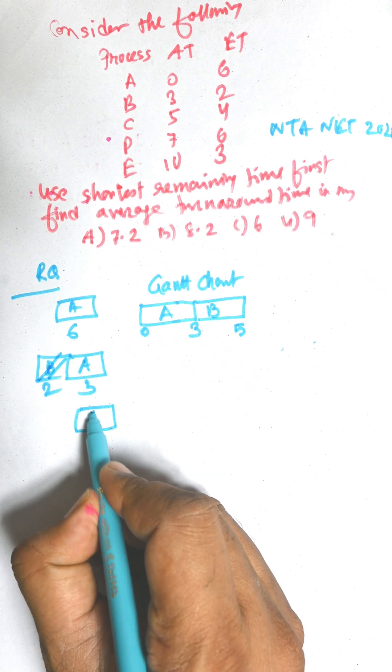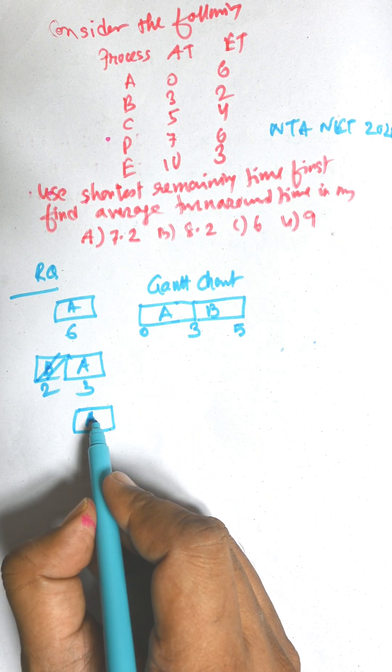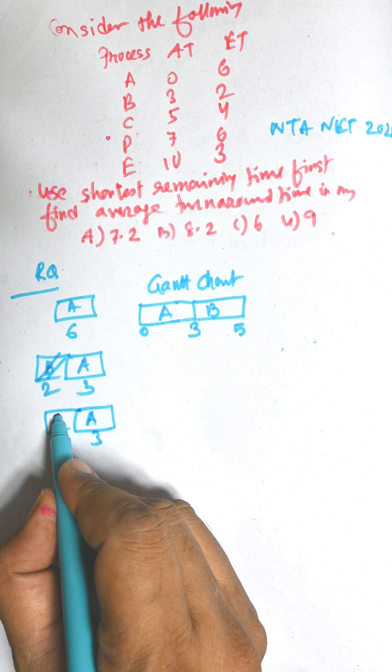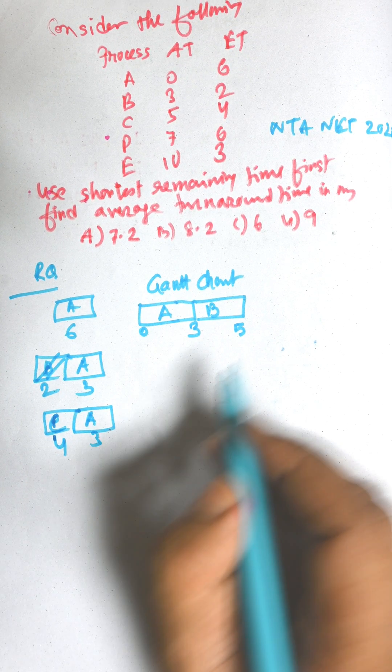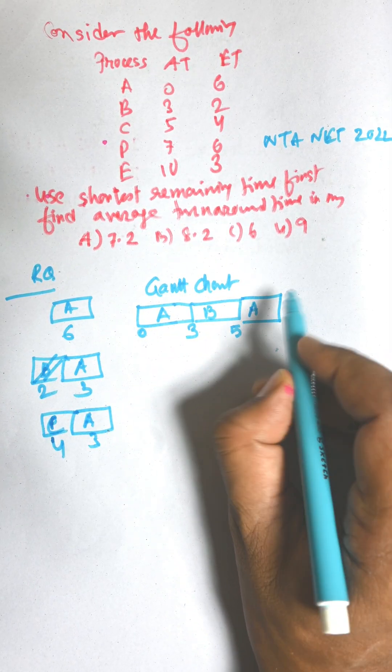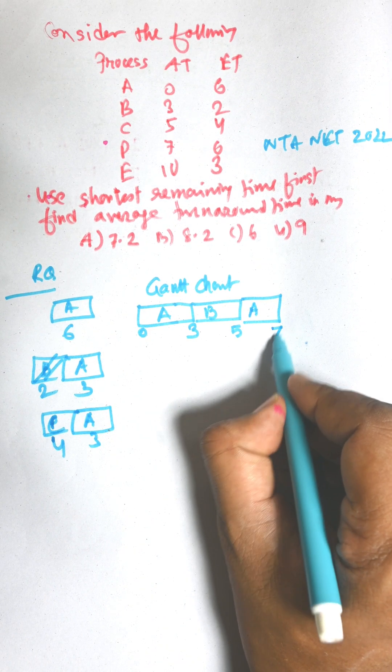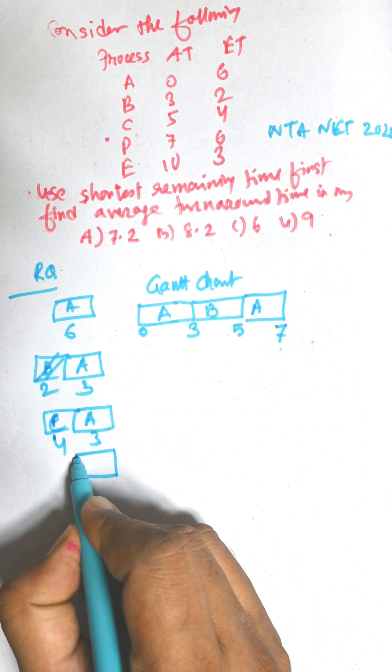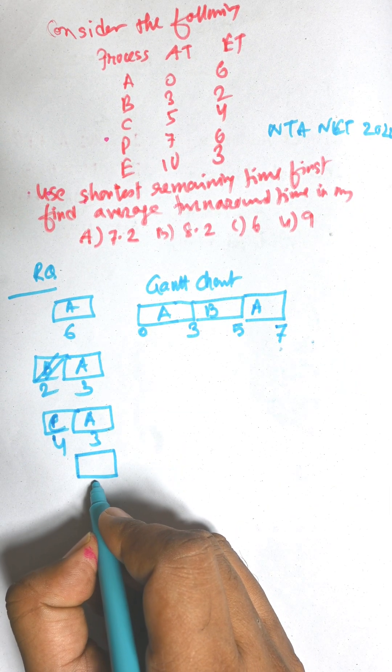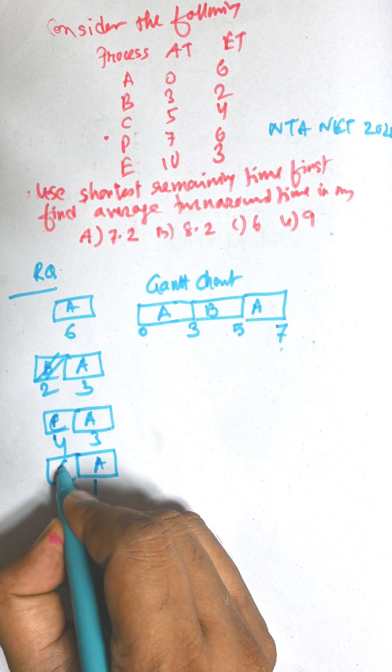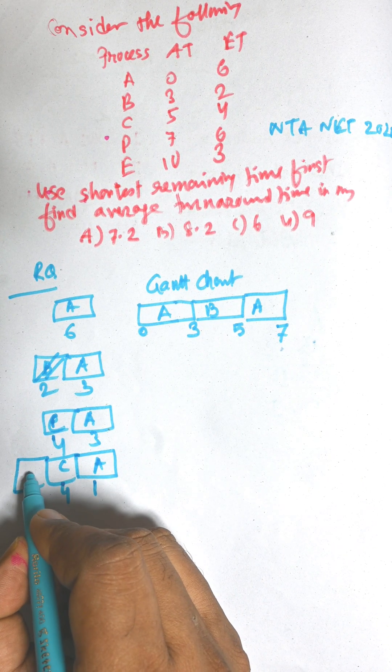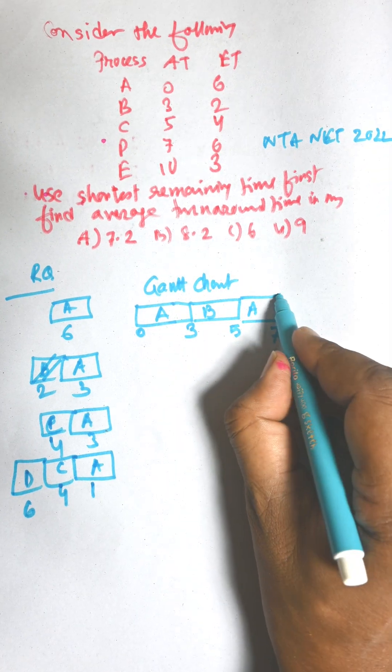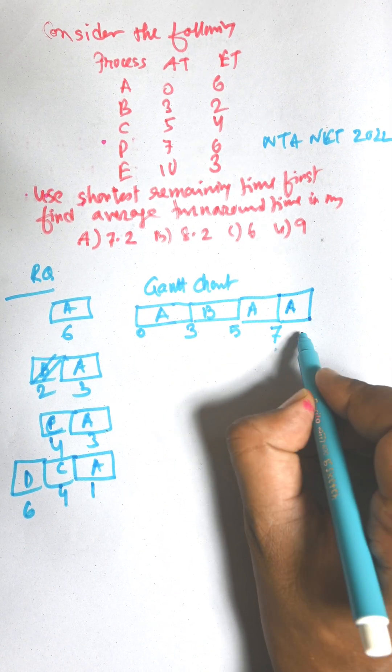B will execute up to 5 and B will finish execution. Then A and C will arrive. Among A and C, shortest job is A. So A will execute until the next process arrives, that is up to 7. Then remaining time of A is 1, so A will finish its execution at 8.